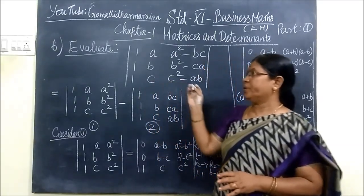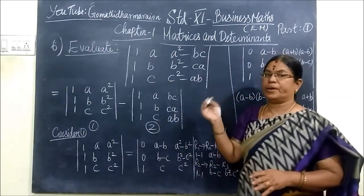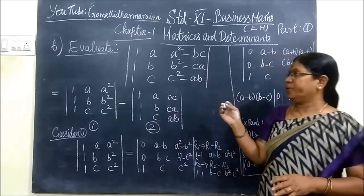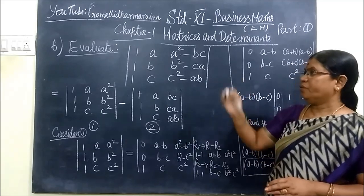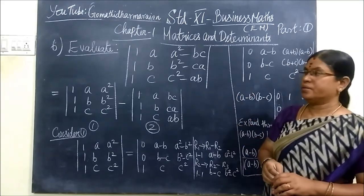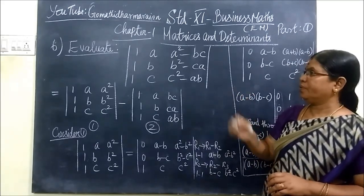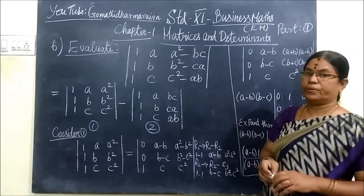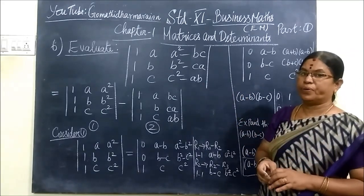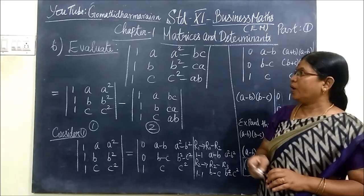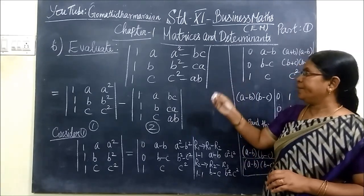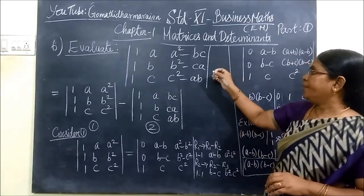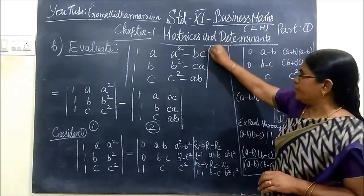Questions 6, 7, and 8 are slightly difficult. Now we do the problem. It is given — evaluate it. That means we have to find the value of the determinant. Determinant means it has vertical bar lines.